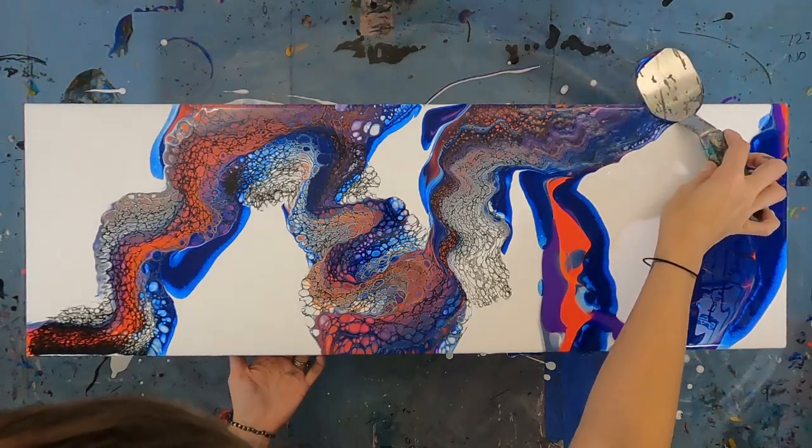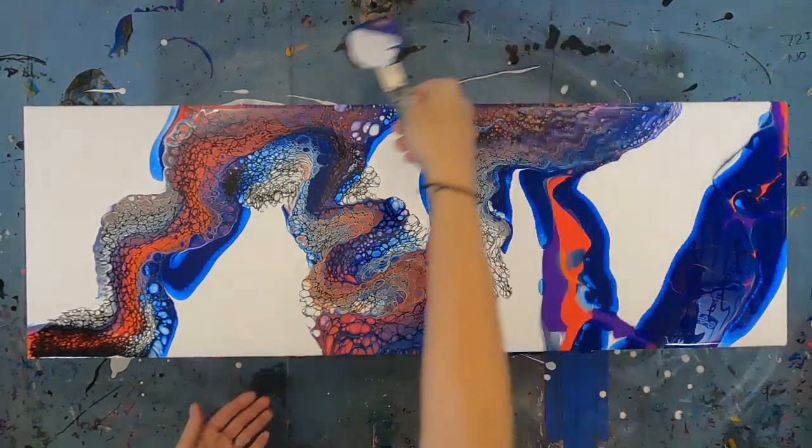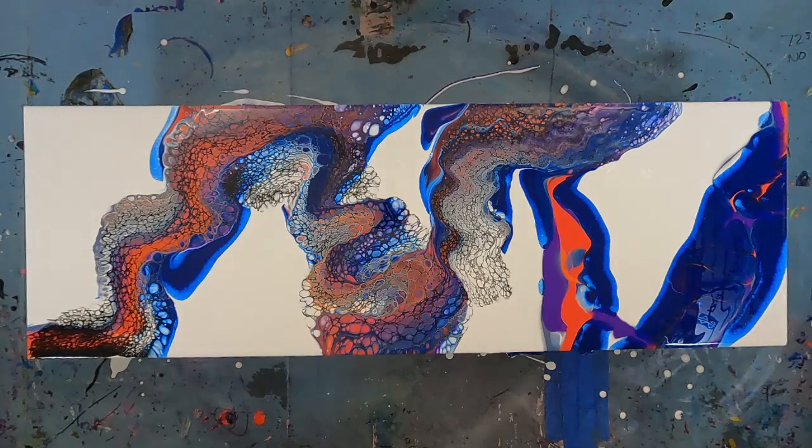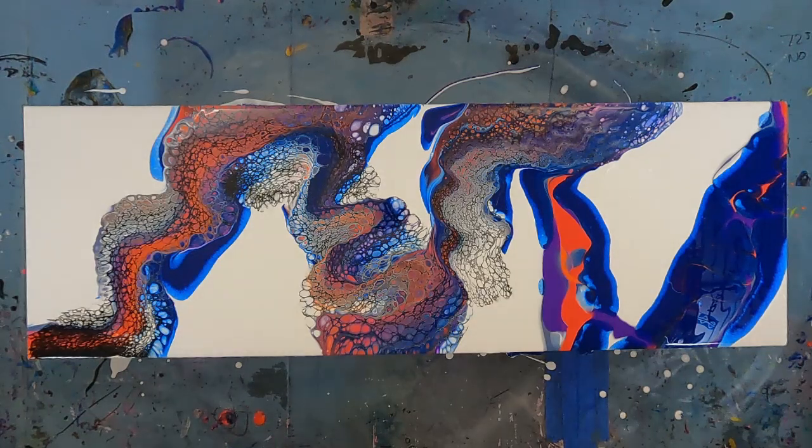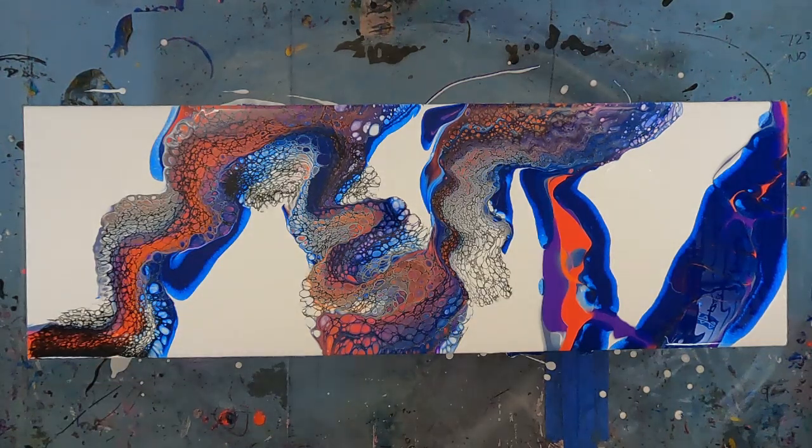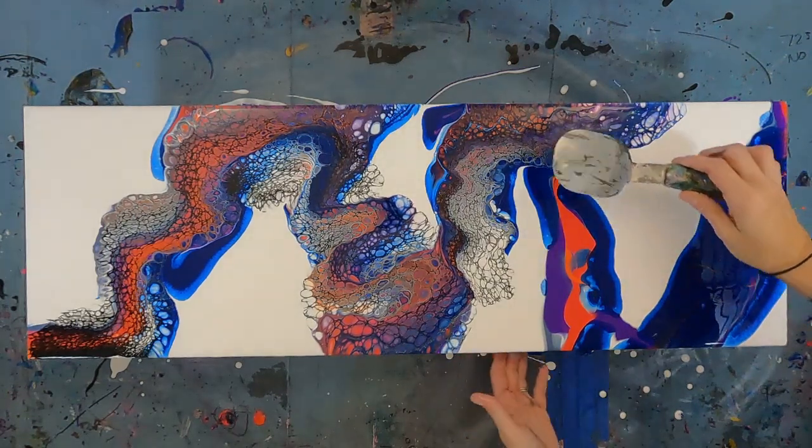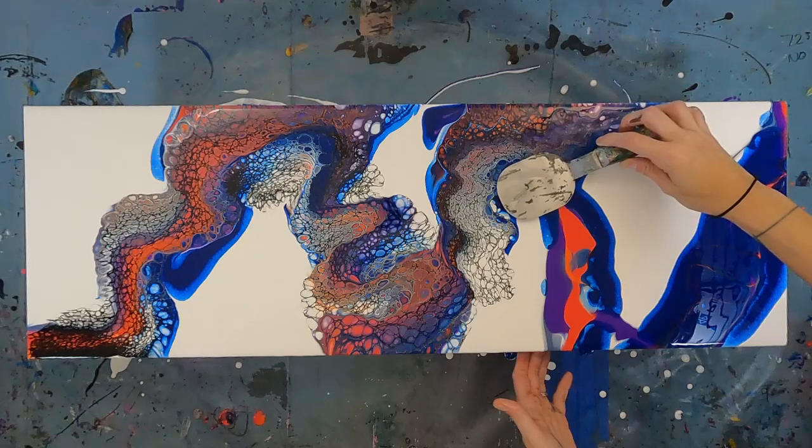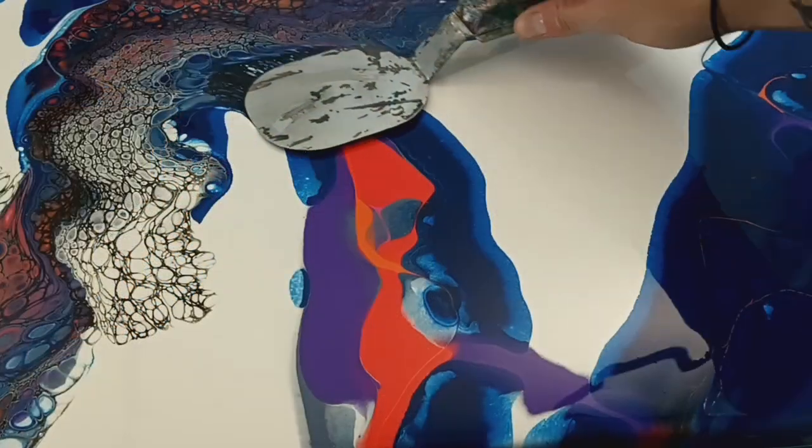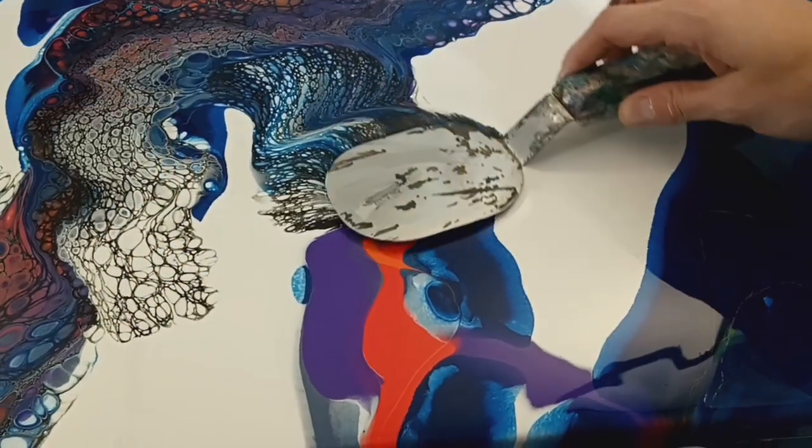Remember, if a pour doesn't turn out exactly how you pictured it, you can always paint over it. Just make sure to give that canvas time to dry and cure, or you risk reactivating the paint on the canvas, which can be messy.